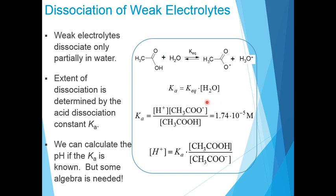For weak electrolytes, the extent of dissociation is determined by the acid dissociation constant Ka, given by the concentration of H⁺ times the concentration of the conjugate base (acetate ion) divided by the concentration of acetic acid. For acetic acid, Ka is the experimentally known value of 1.74×10⁻⁵ molar. We can calculate pH if Ka is known, but some algebra is needed.